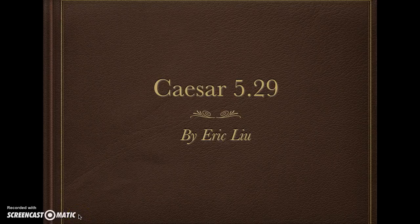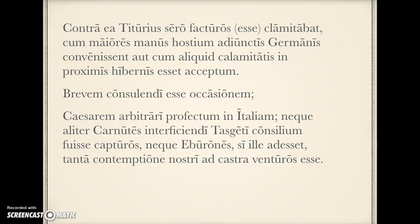Hi guys, this is Eric, and I'm doing Caesar 5.29 today. Contra ea titurius zero facturus calamitabat. So, Titurius is the main subject here, and calamitabat is the main verb here, and it starts a big indirect statement.